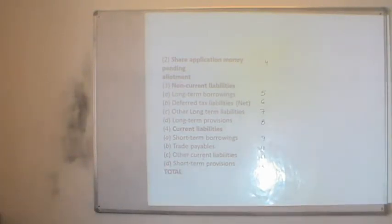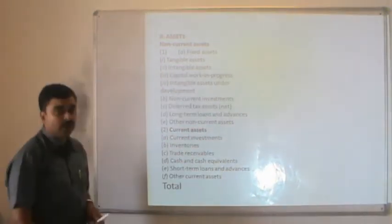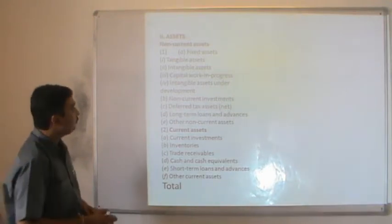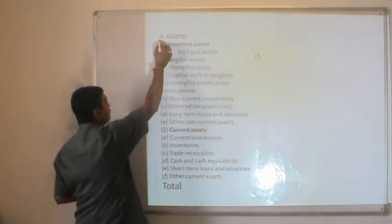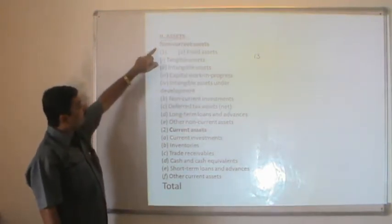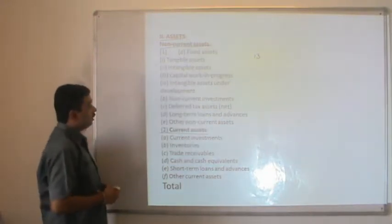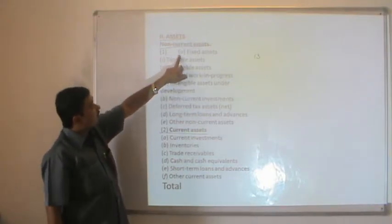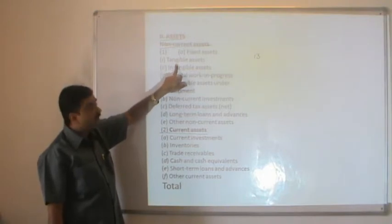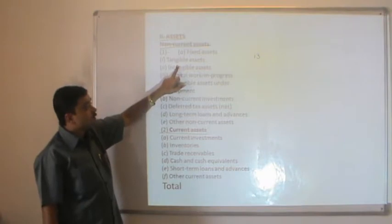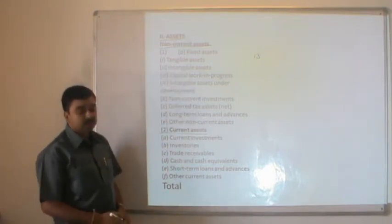Thereafter, the second part of the company's assets will start. We have made a total of 12 schedules or notes. The thirteenth will be for tangible fixed assets. The assets are divided into two parts: non-current assets and current assets. Non-current assets are again divided into fixed assets — tangible fixed assets and intangible fixed assets. Tangible fixed assets are assets which can be seen, touched, felt, and which are used for the purpose of production. That will be called tangible assets, and its detail is written as Notes of Accounts Number 13.